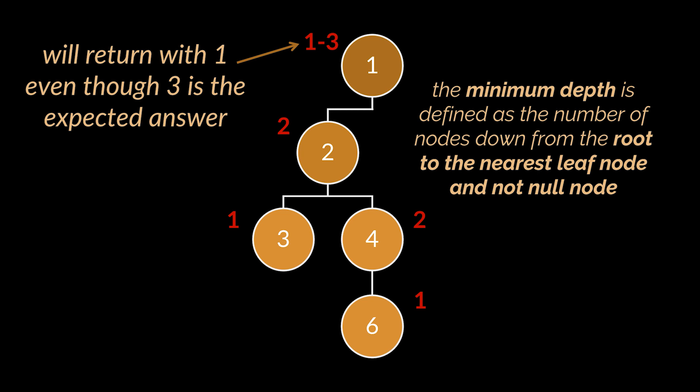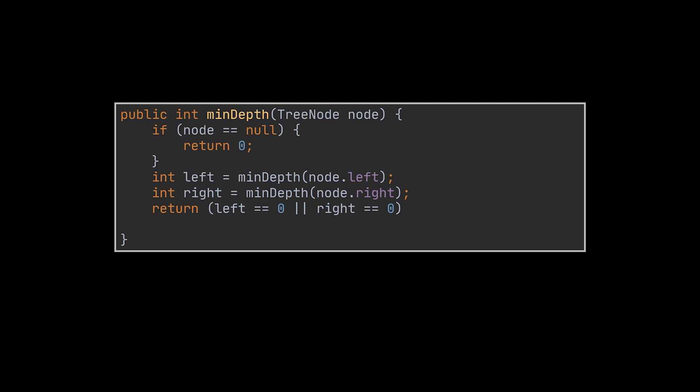As the minimum depth is defined as the shortest path from the root down to the nearest leaf node and not null node. So when a node does not span a left branch, for example, and a zero is returned, that zero should not be taken into consideration if that same node spans a right branch.